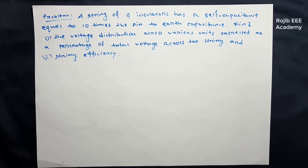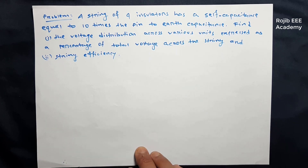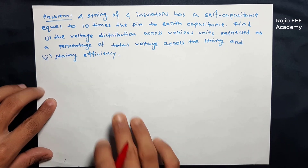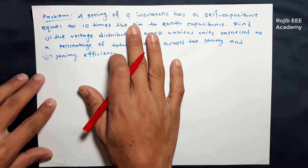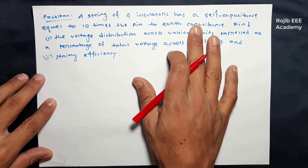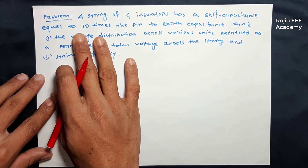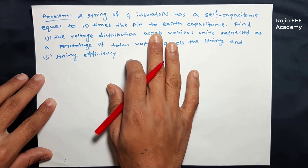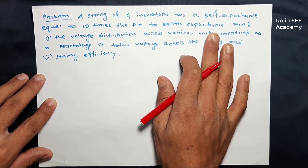Hi, this is the power system analysis course video. We will solve string efficiency related problems. The problem is that a string of four insulators has self-capacitance equal to ten times the pin-to-earth capacitance.